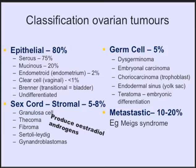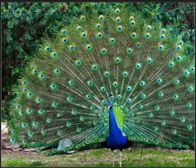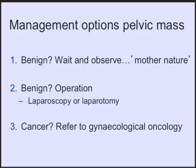The embryonal cell carcinoma and choriocarcinoma produce specifically beta-hCG. I assume you're now sufficiently impressed — the differential diagnosis is very extensive and complicated, and that might actually discourage you from looking further into this topic. That's why I would like to provide you with a simple tool and some guidance.